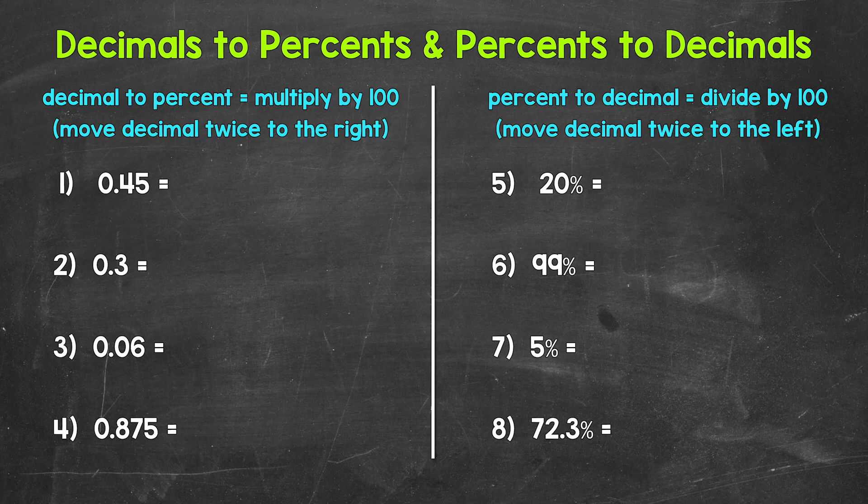Let's jump into number one, where we have 0.45 — 45 hundredths. When we go from a decimal to a percent, we multiply by 100. A quick way to multiply by 100 is to move the decimal twice to the right.